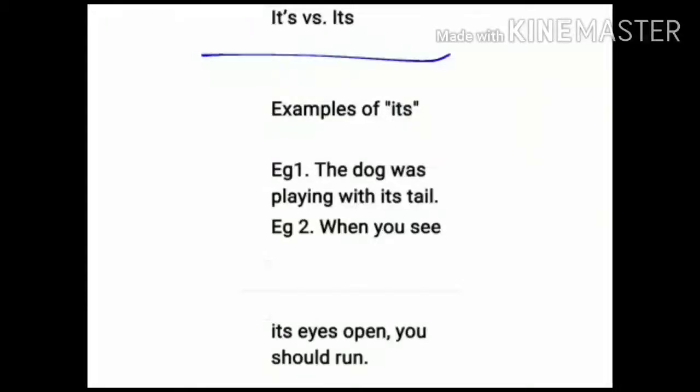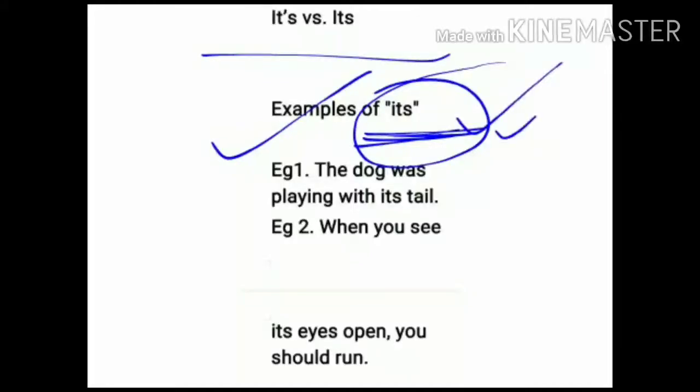It's versus its—that is with apostrophe and without apostrophe. Now see the examples of its. Its is the possessive form of it. There is no apostrophe when we are talking about possession of it. Its possessive case has no apostrophe.